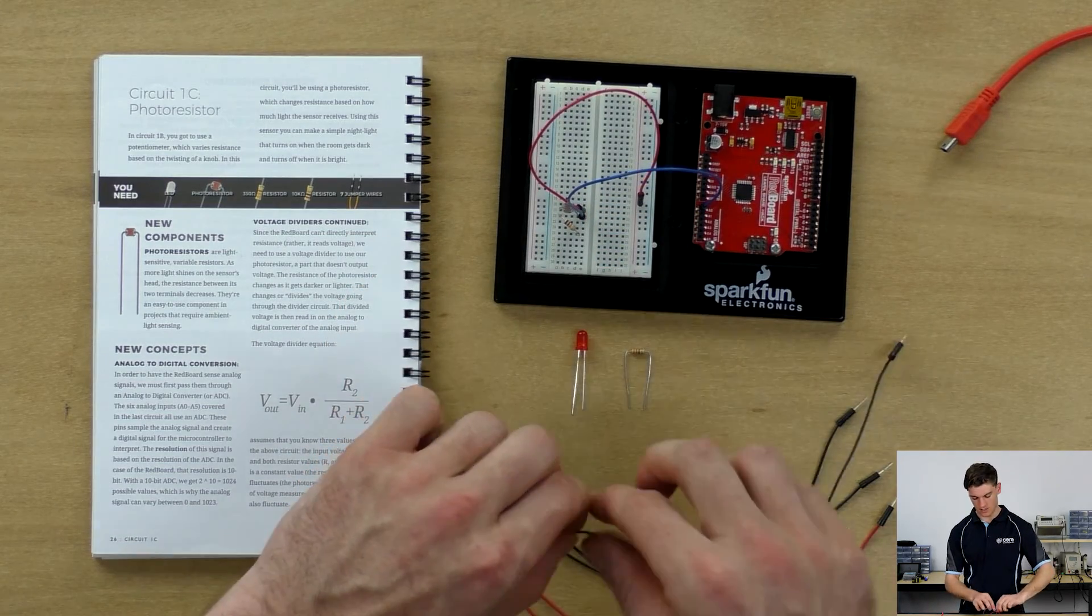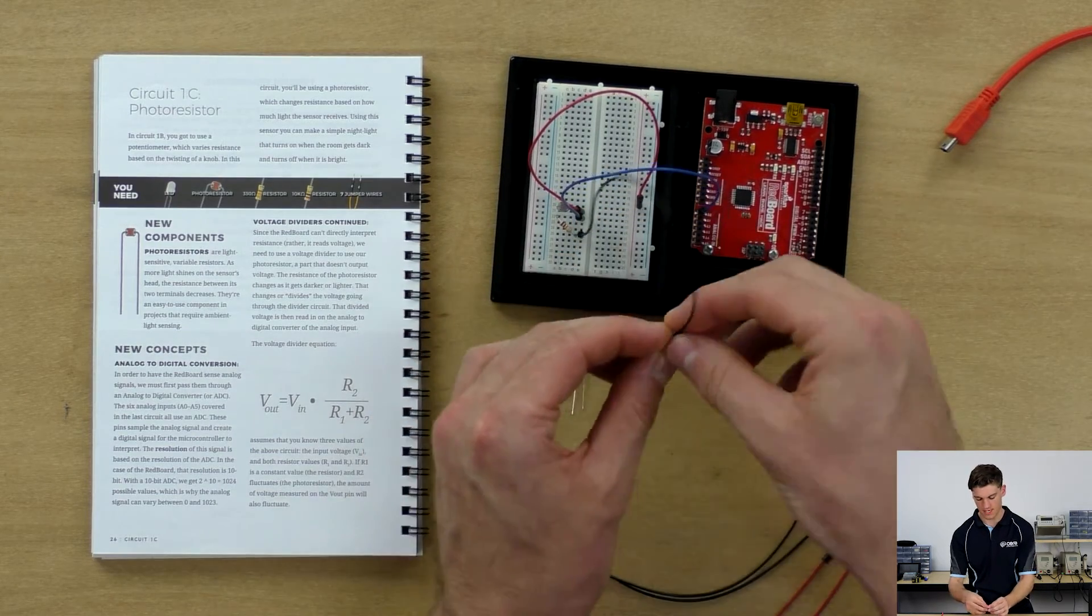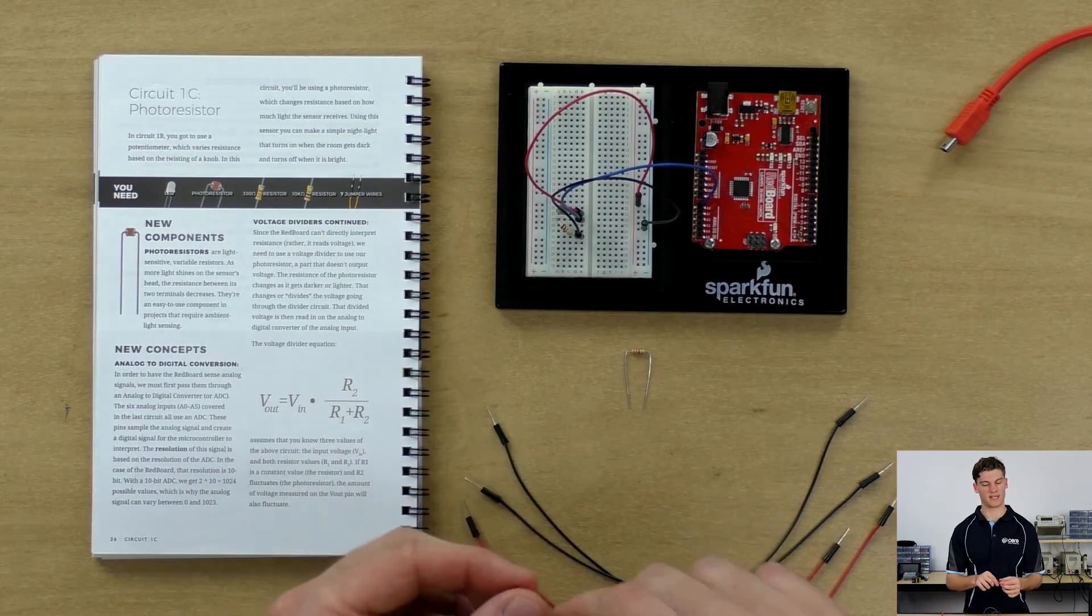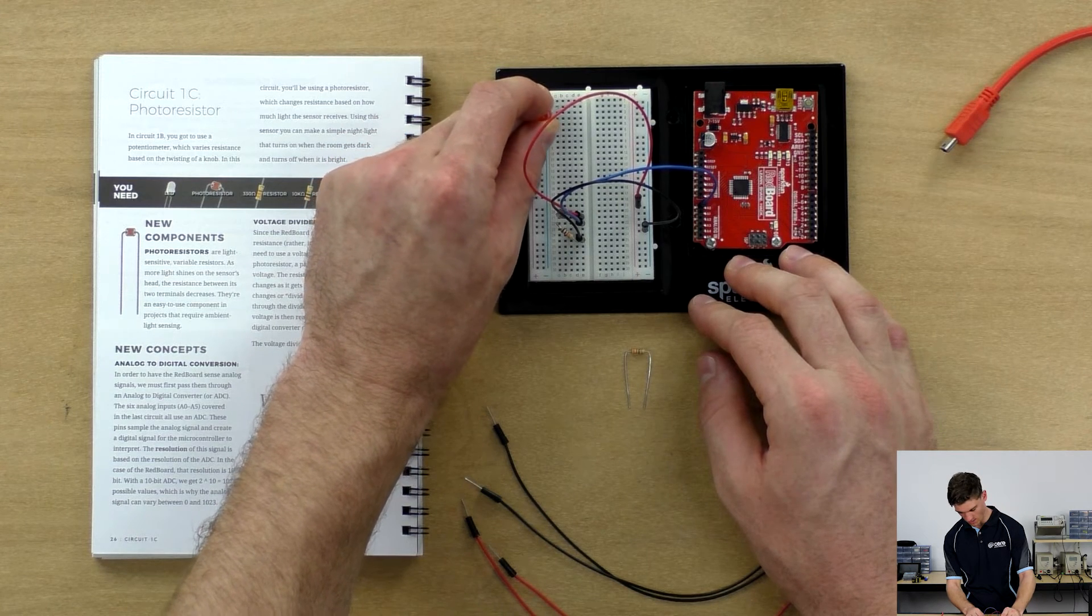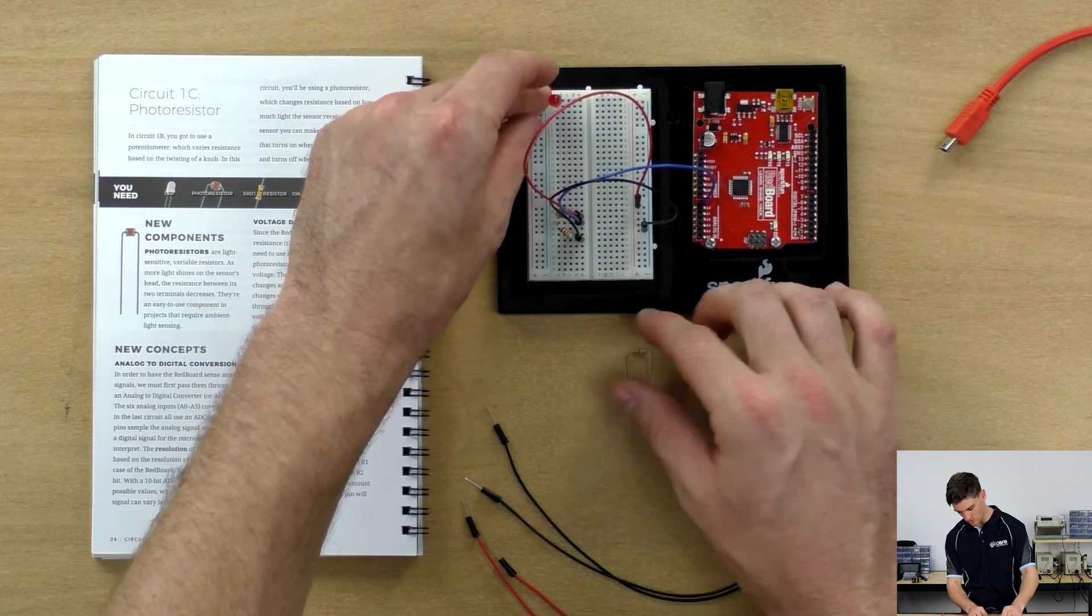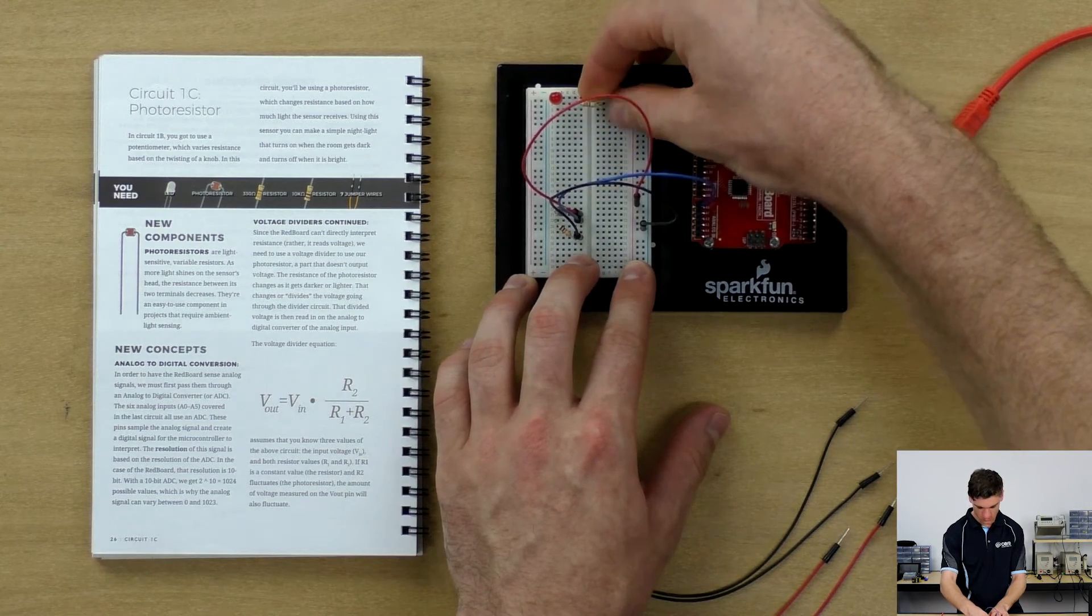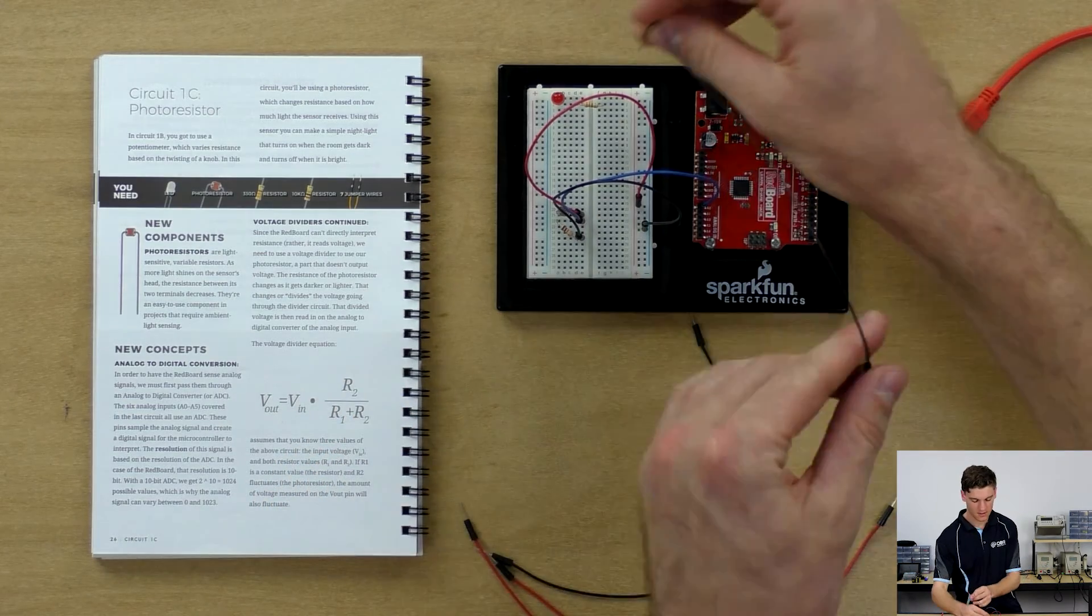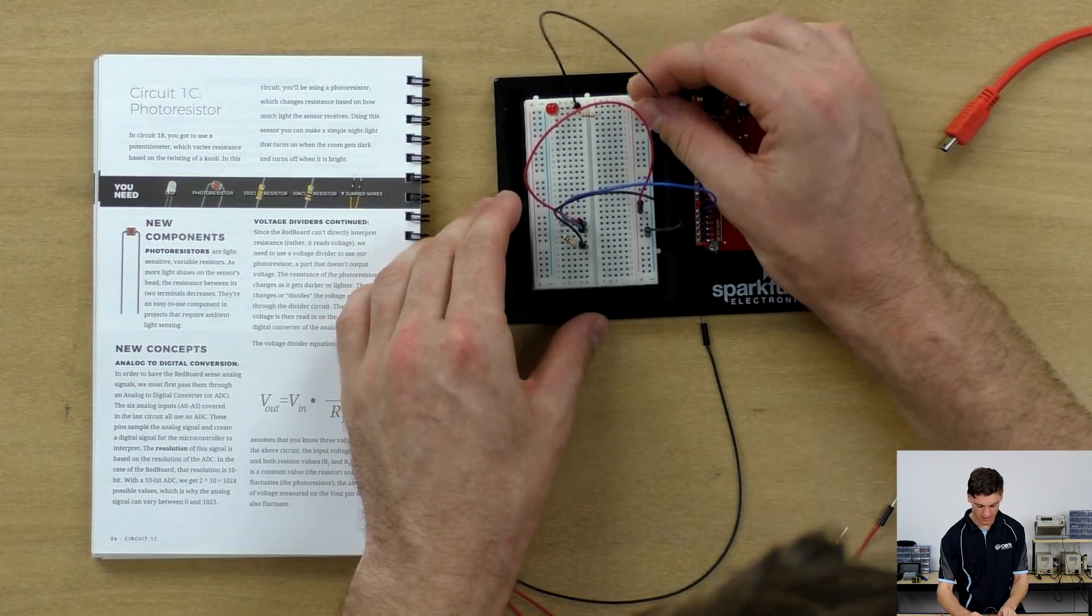Then we're going to connect the ground to E25 to the negative power rail and we're simply going to assemble the LED the same way that we have in the previous two videos with the positive leg going from 2A and the negative leg connecting to 1A. Then E2 to F2 with the 330 resistor. The negative connection going from E1 to the negative power rail.